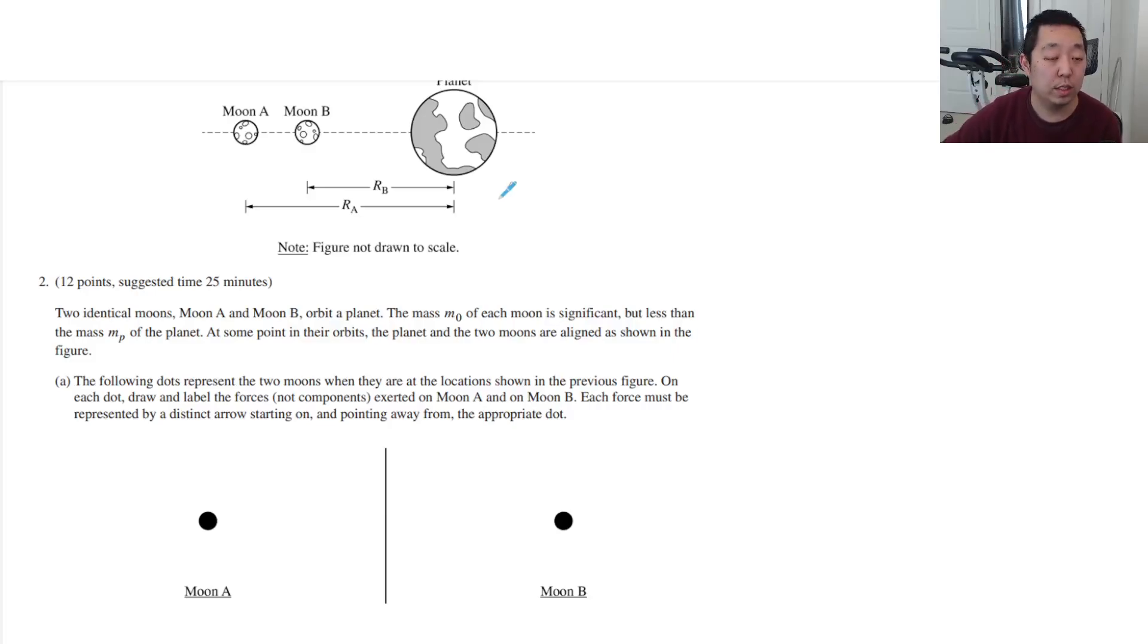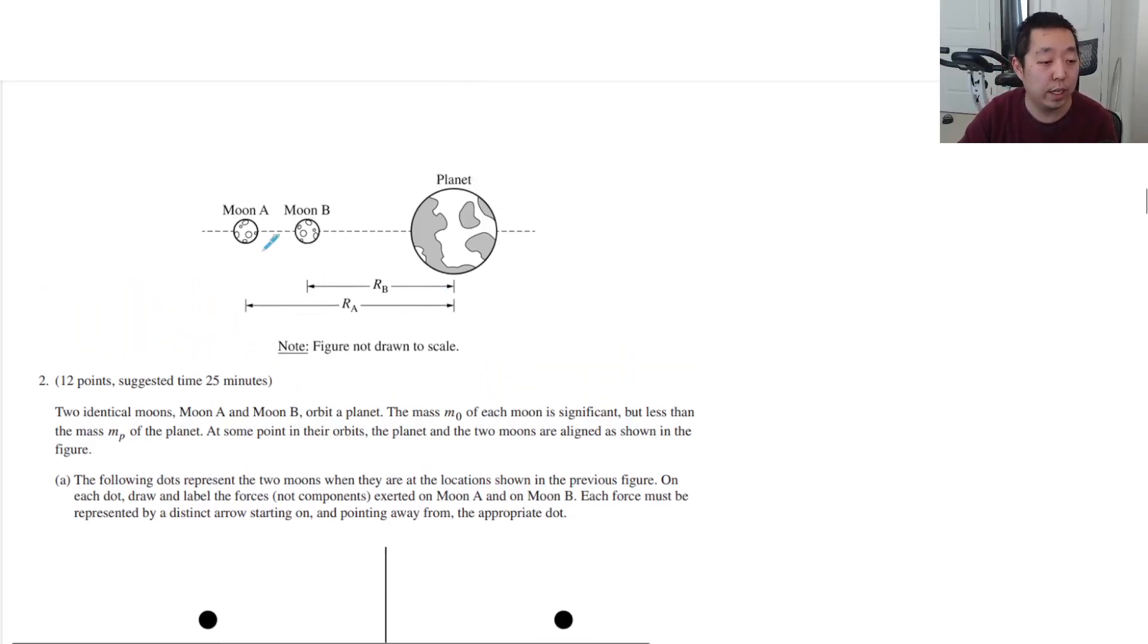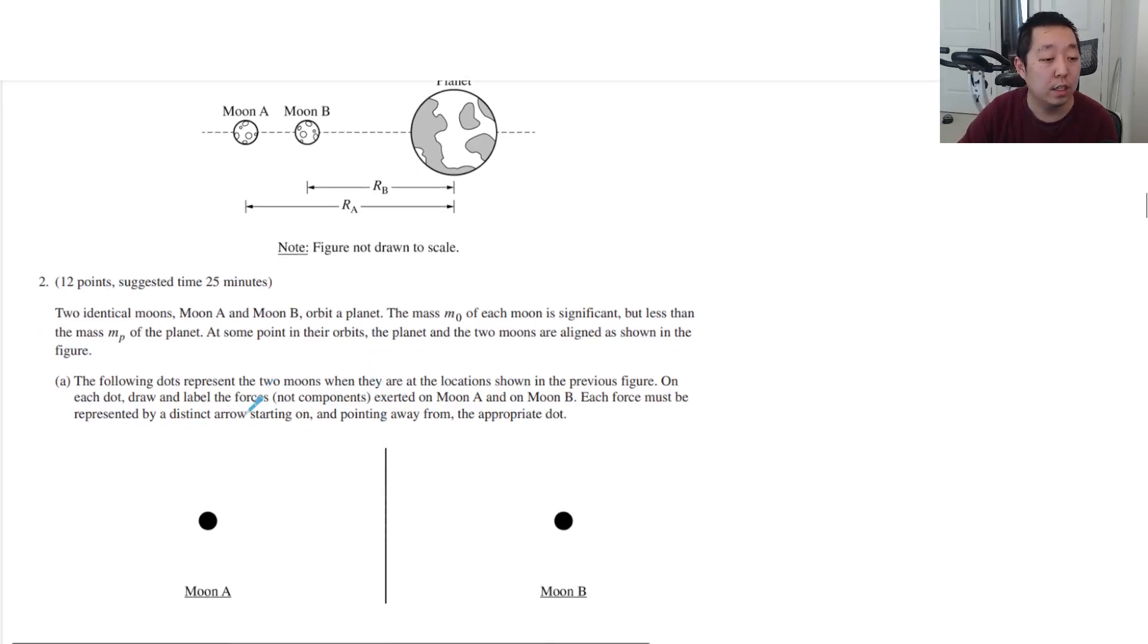Let's look at number two here. Two identical moons, moon A and B, orbit a planet. The mass M0 of each moon is significant, but less than the mass MP of the planet. At some point in their orbits, the planets of the two moons are aligned as shown in the figure. The following dots represent the moons when they're in the location shown in the previous figure. On each dot, draw a free body diagram.